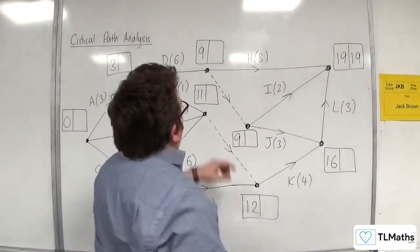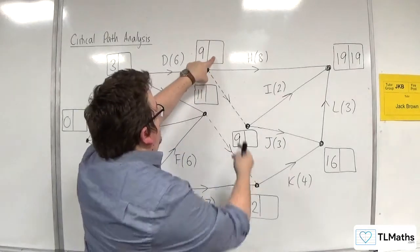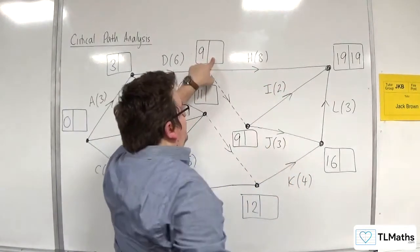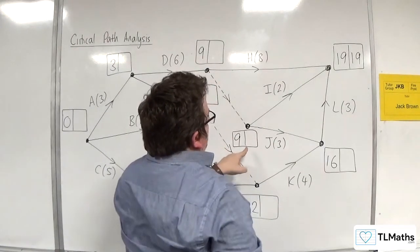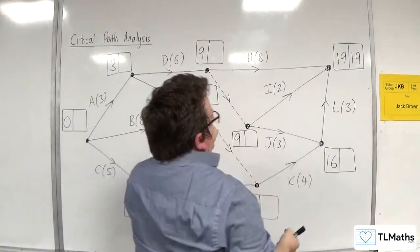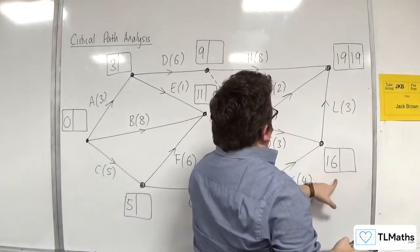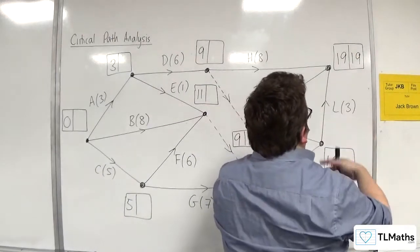Now, we're not going to go straight to that one because there are two routes back. We can't go to that one because there are two routes back, so we're going to have to go to this one. So 19 take away 3 is 16.